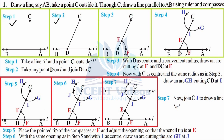That completes step three — mark point E and F. Step four: with C as center, place the needle of your compasses on point C with the same radius used for the previous arc. Draw an arc GH cutting line CD at I. With the same radius, put your compasses needle at C and draw arc HG, which must cut line segment CD at I.